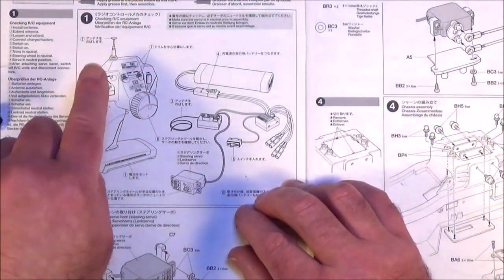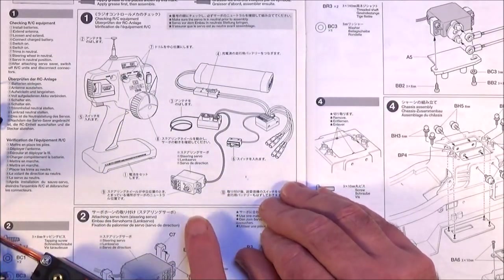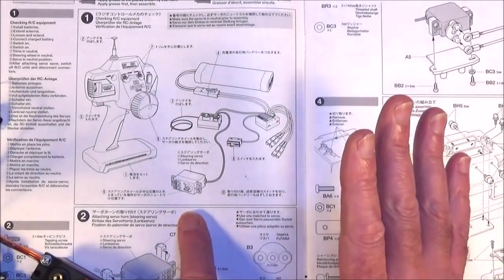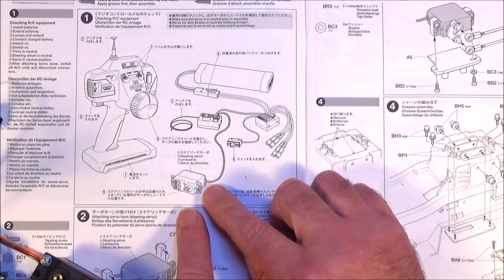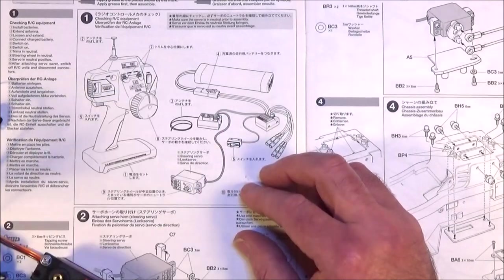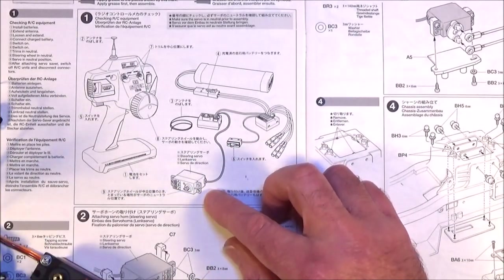Okay so step 1 says checking the RC equipment but basically what we're really doing is setting the center point for that servo and whatever you do, do not miss out this stage because if you haven't got the servo in neutral by the time you get to the end of the build and it's not right it's going to be a nightmare to disassemble everything and to try and get to that servo and correct the setting.